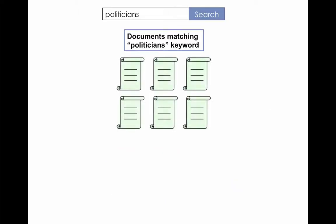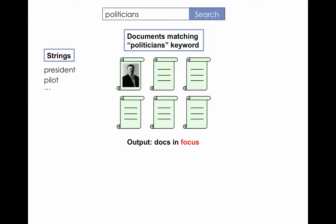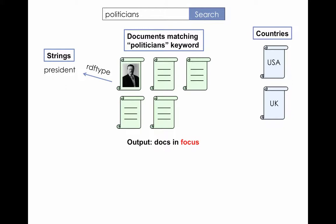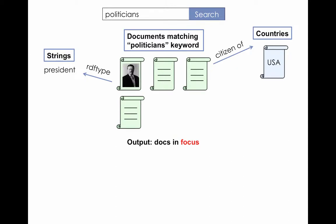We started with a keyword-based search and entered 'politicians'. The system returned a set of initial documents displayed on the screen. Next, we took a set of strings such as 'president', 'pilot', and so on for further filtering. We used the facet 'rdf:type' to select documents labeled with the string 'president', and documents not labeled with 'president' disappeared. Next, we took a set of documents about countries such as the USA and UK. We used the facet 'citizen of' to relate documents about American presidents and documents about countries. We set the country to the USA, and documents not about American presidents disappeared.